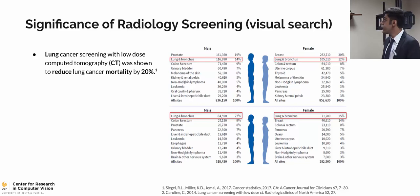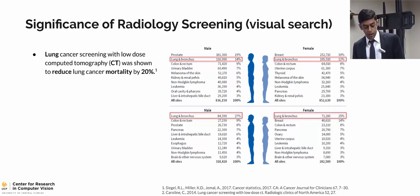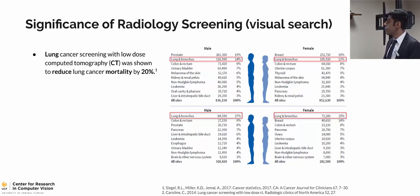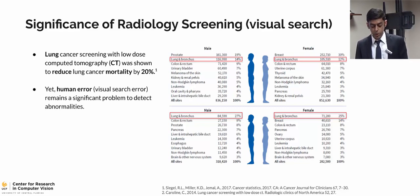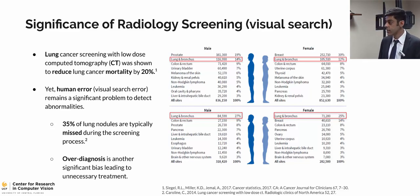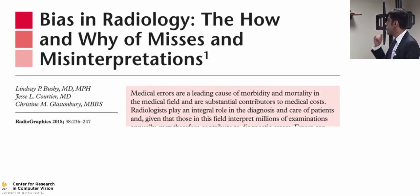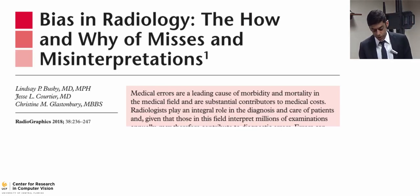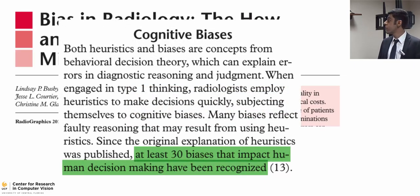Radiology screening is very significant in the cancer screening process. As an example, I'll talk about lung cancer screening, which most topics of this dissertation are wrapped around. It's been proved that mortality rate can be reduced by 20% with low-dose CT screening of lung cancers. However, human error remains a significant issue in this process. It's been proved that 35% of the abnormalities are totally missed during the screening process, and over-diagnosis is a very huge problem that can cause unnecessary treatments. A great study in 2018 showed why these misses are happening and studied different types of biases in radiology screening, finding 30 types of biases that can affect the radiologist's decision.